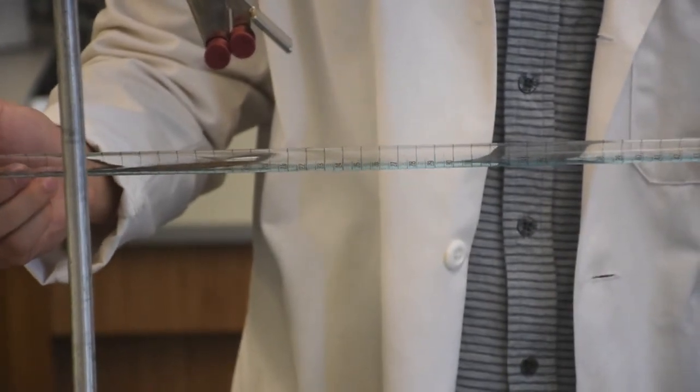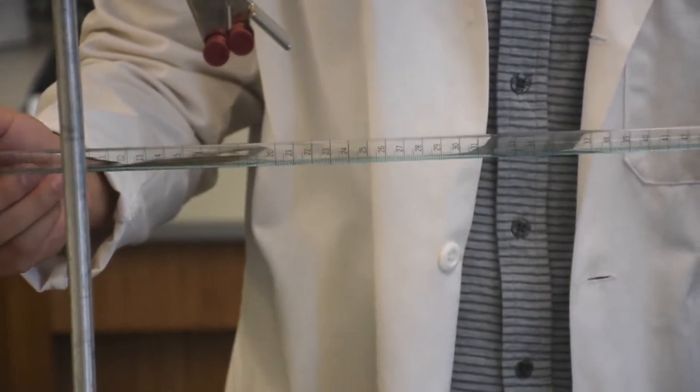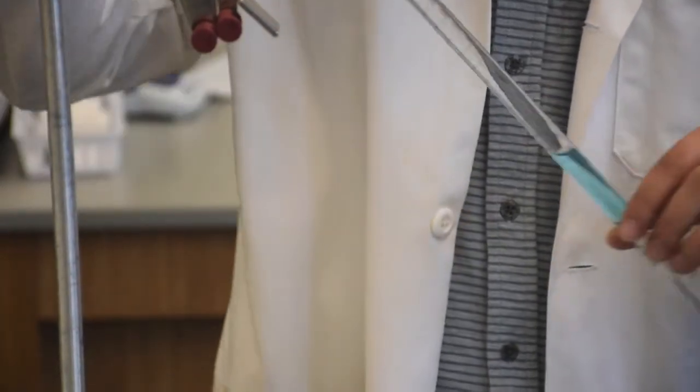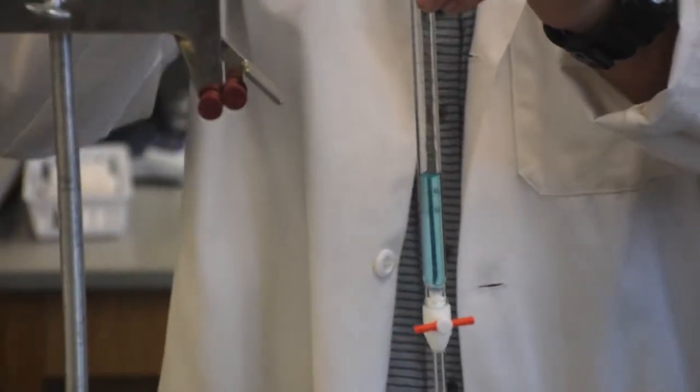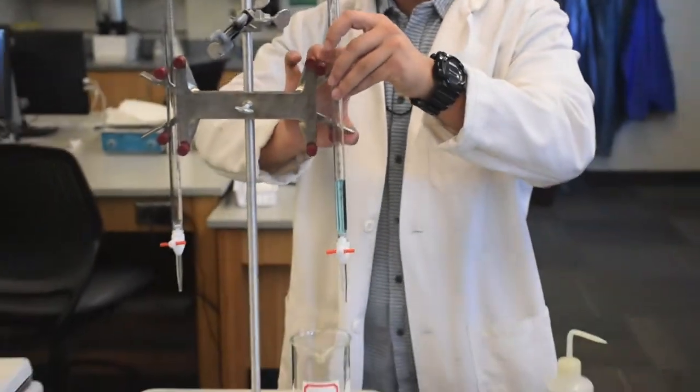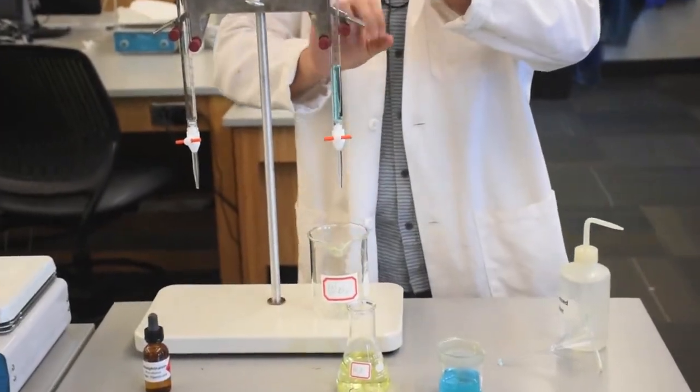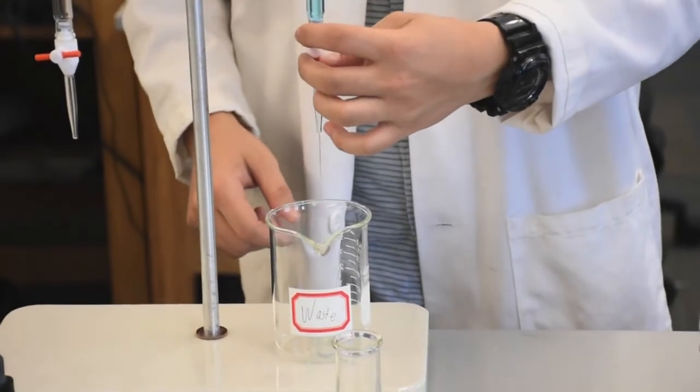In this case, the titrant being used is sodium hydroxide. The last step of washing is essential if you need to be very precise when calculating the concentration of the titrant. Now dispense the last washing into a waste beaker.